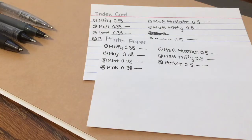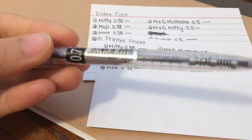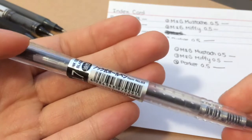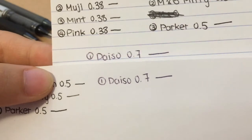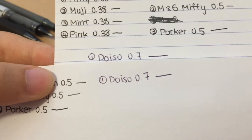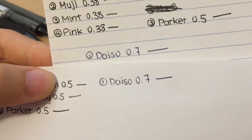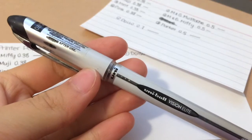So finally we just have some random sizes and first off we have the 0.7 Daiso pen. And I use this to do my homework a lot. It's a different color compared to all the other pens but surprisingly it's really thin.